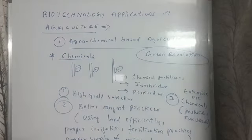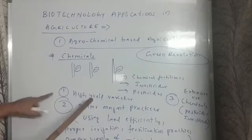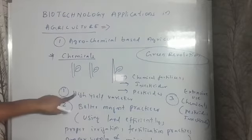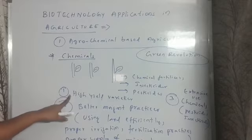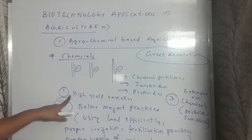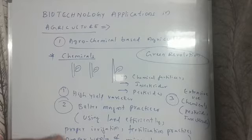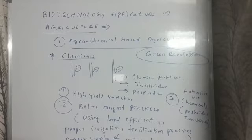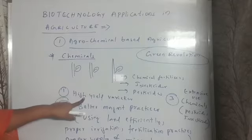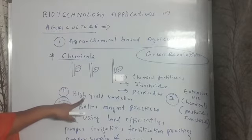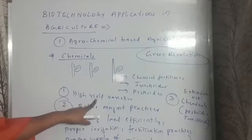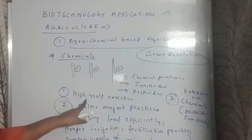Now let's understand what happened in the 1960s, why the food production rate was so high. The reason number one is, at that time, we were using high yielding varieties. By conventional plant breeding techniques, when we cross better plants, we get a much better plant. For example, if we cross a high yielding tomato with a disease resistant tomato plant, the next generation plants would be both high yielding and disease resistant. So we created hybrid varieties using conventional plant breeding techniques.